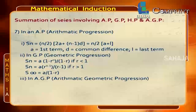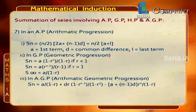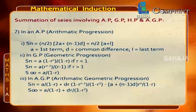In an arithmetico-geometric progression (AGP), Sn = a/(1−r) + dr(1 − rⁿ⁻¹)/(1−r)² − [a + (n−1)d]rⁿ/(1−r). The sum to infinity S∞ = a/(1−r) + dr/(1−r)². Here, a is the first term, d is the common difference, and r is the common ratio.